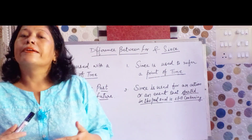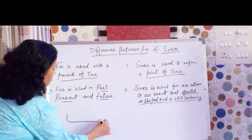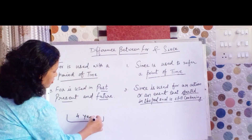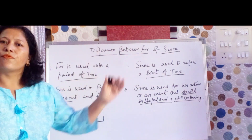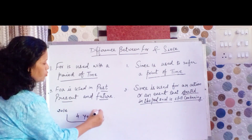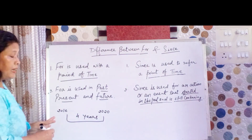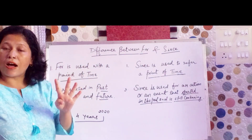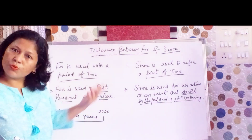Now we will get to know them with the help of examples. 'I lived in London for four years' — that is 2016 to 2020. 'I lived in London for four years' — the period spans from 2016 to 2020.